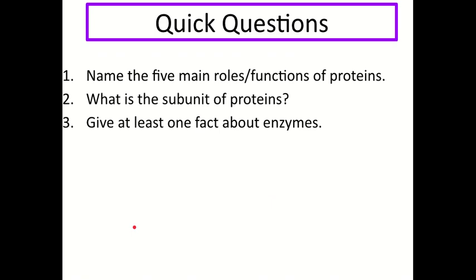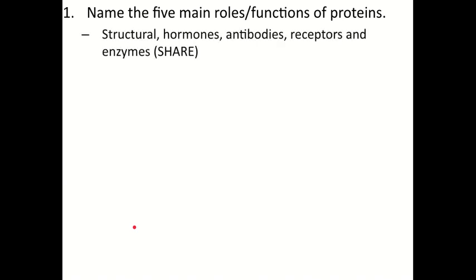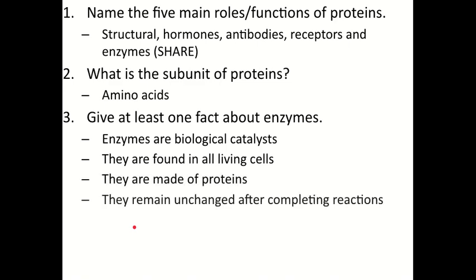Before we move on to look in more detail at enzymes and their substrates, let's try some quick questions. Pause the video and try the questions, then play when you're ready for the answers. Question one: name the five main roles of proteins — Structural, Hormone, Antibody, Receptors, and Enzymes, so remember SHARE. Question two: what is the subunit of proteins? Amino acids. Question three: give at least one fact about enzymes — they are biological catalysts, found in all living cells, made of proteins, remain unchanged after reactions, and speed up cellular reactions. By the end of this topic, you need to know them all.